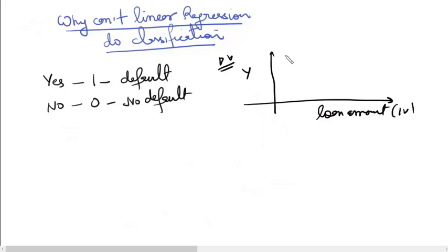So a customer who defaults will lie at 1 here. This is the point 1 on y axis and this is the origin. So we will have few points here. These are customers who defaulted. We will probably have more points on the right hand side because as the loan amount increases you have a greater potential to default and you will also have a few people who did not default of course.